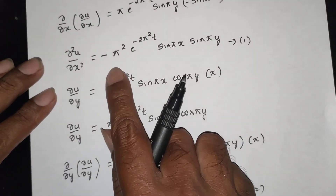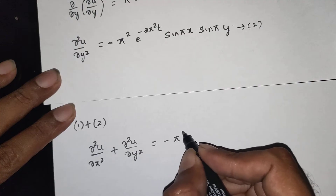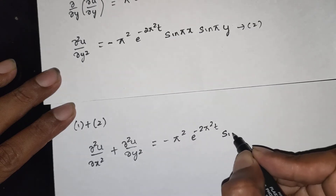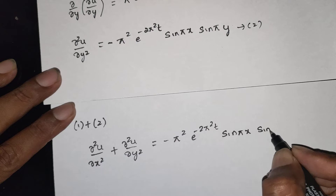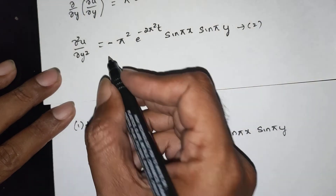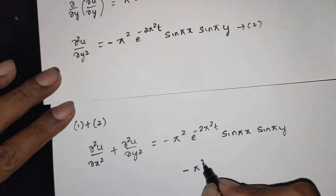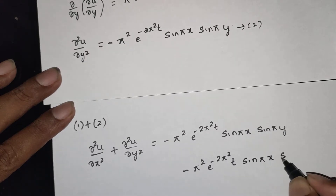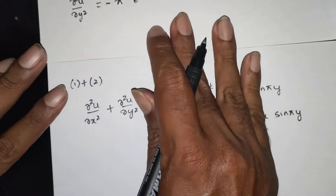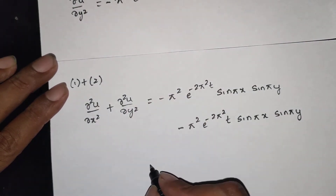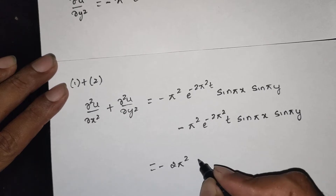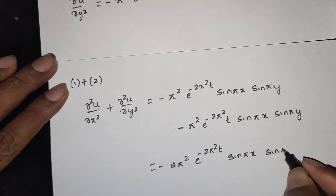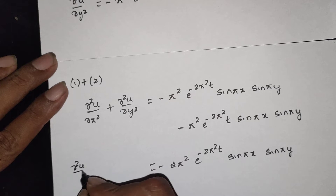Now adding equations one and two. dou squared u by dou x squared plus dou squared u by dou y squared is equal to minus pi squared e power minus 2pi squared t sin(pi x) sin(pi y) plus minus pi squared e power minus 2pi squared t sin(pi x) sin(pi y), giving minus 2pi squared e power minus 2pi squared t sin(pi x) sin(pi y).